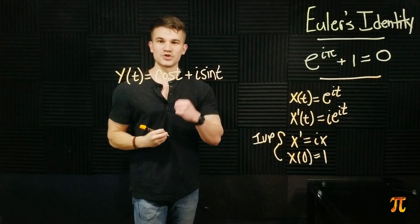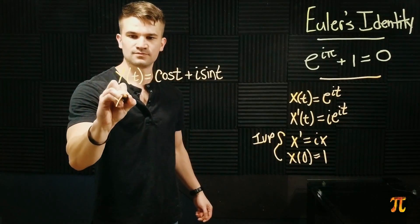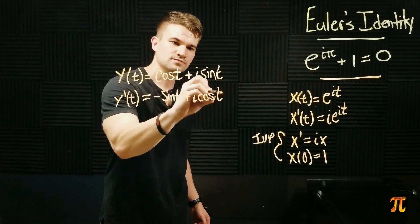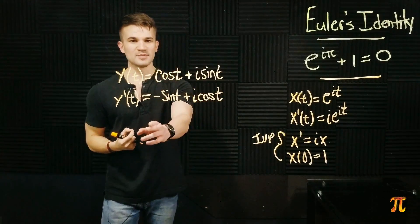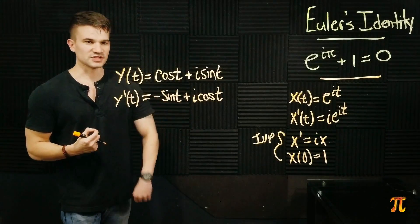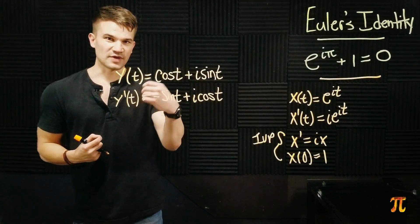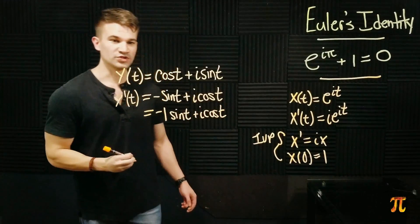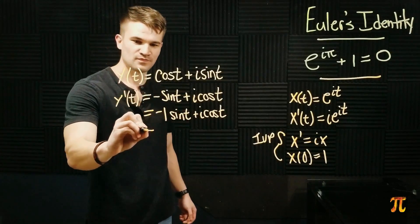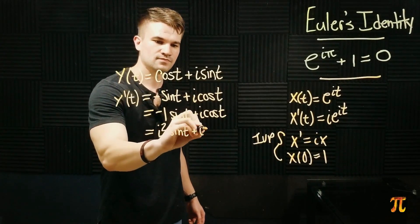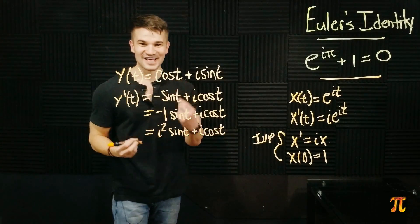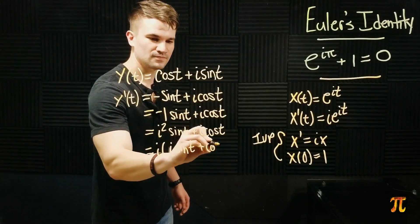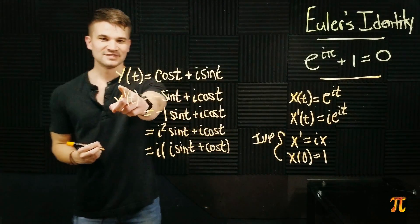Let's go ahead and take the derivative of this function y. We have that y prime of t is negative sine t plus i cosine t. Now this negative we can write as negative 1 which is of course i squared, and then we can factor out that i which is i times y.